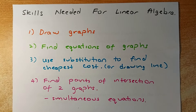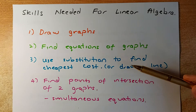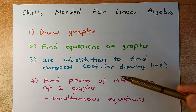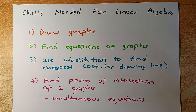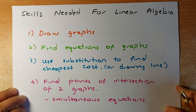Good morning everyone and welcome to another video on Mr Ormet's lesson. Today we are going to look at some of the skills required for you to pass the internal linear algebra, which is worth three credits in NCEA. There are four skills you need to know: draw the graph, find the equation of the graph, do substitution to find the cheapest course, and find the point of intersection of the two graphs using simultaneous equations. Linear algebra is made up of algebra as well as graphs, so if you can combine them together you should be able to get at least an achieve or a merit in this internal.